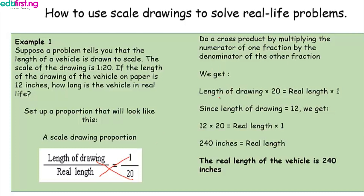When we cross multiply, we get: length of drawing times 20 equals real length times 1. Since the length of the drawing is 12 inches, we have 20 times 12 equals the real length. So 12 times 20 gives us 240 inches, which equals the real length. Hence, the real length of the vehicle is 240 inches.